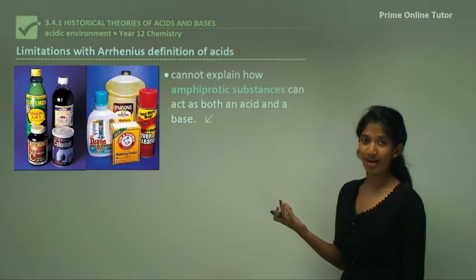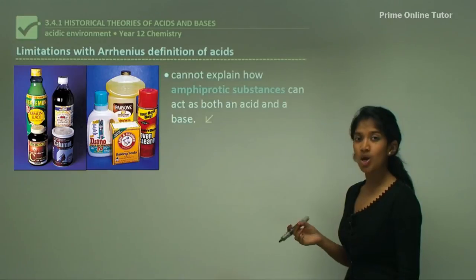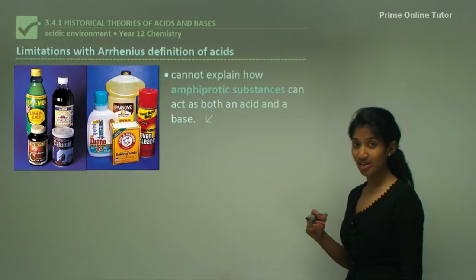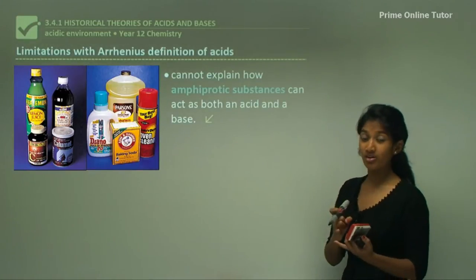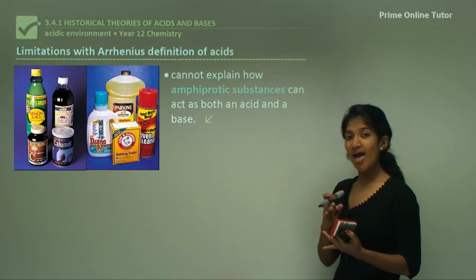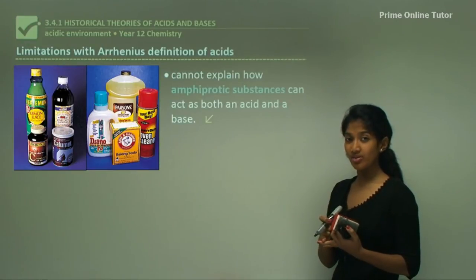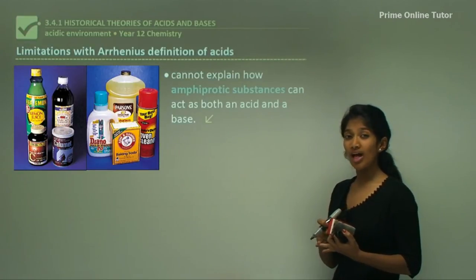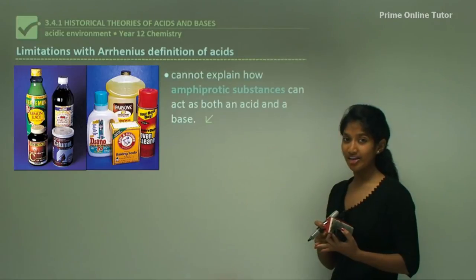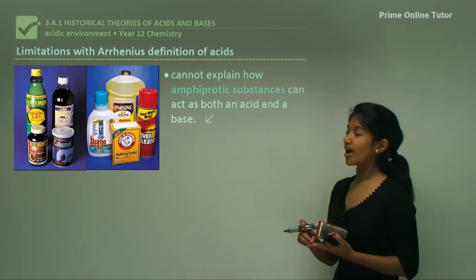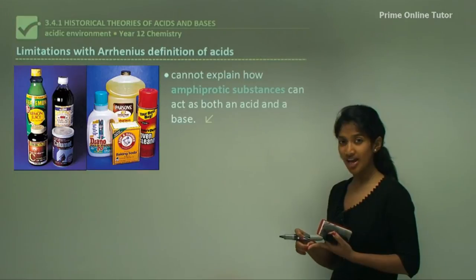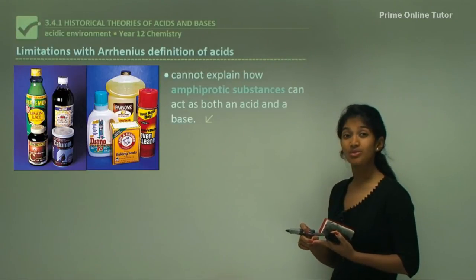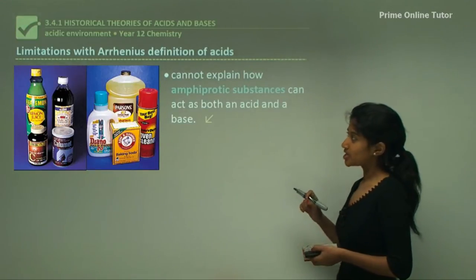Let's look back at what we learned about the theories of acids during history. First came Lavoisier, then Davy who said all acids have hydrogen, then Arrhenius who said acids produce hydrogen ions and bases produce hydroxide ions in solution.